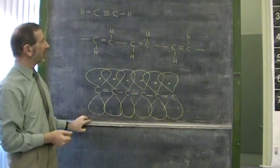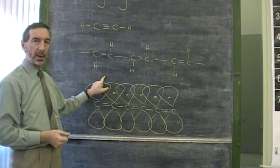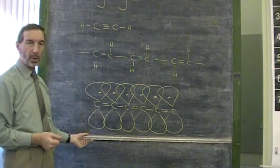So, polyethyne is the polymer which conducts electricity. And it's because it has these delocalized electrons.